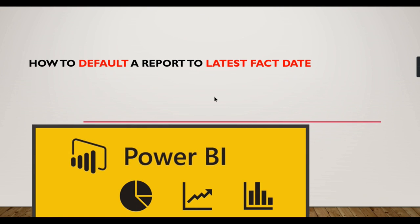In this video we are going to see how to default your report to a latest fact date. Generally when you want to launch a report, it should show previous day results - what happened yesterday. Whenever your business data is latest, you want to see the latest snapshot of it. You don't want to see the entire history. In those cases, whichever is your latest data available in the fact or transaction tables, that date has to be defaulted. Power BI doesn't have that feature natively - we need to do some DAX tricks to achieve it.